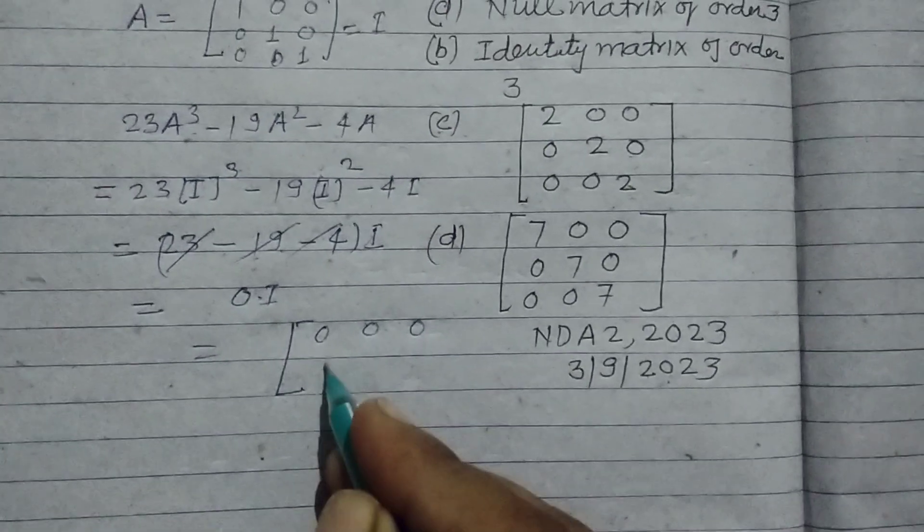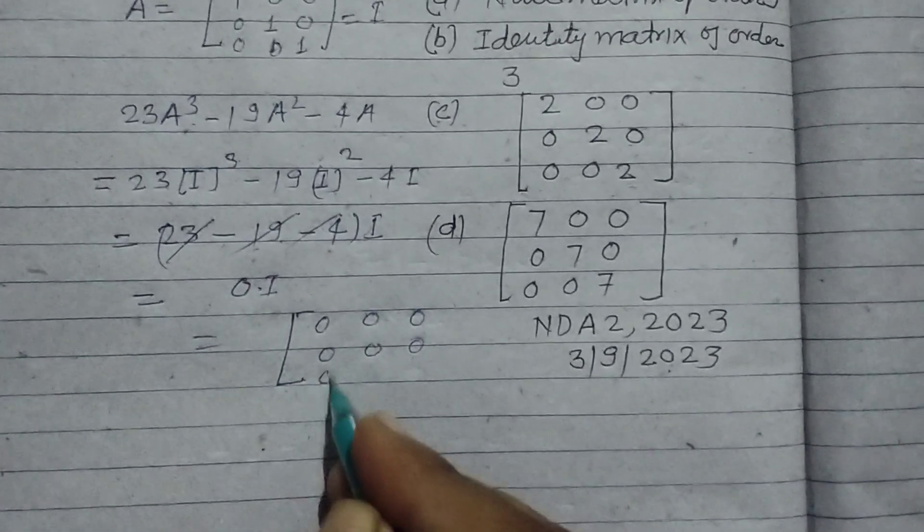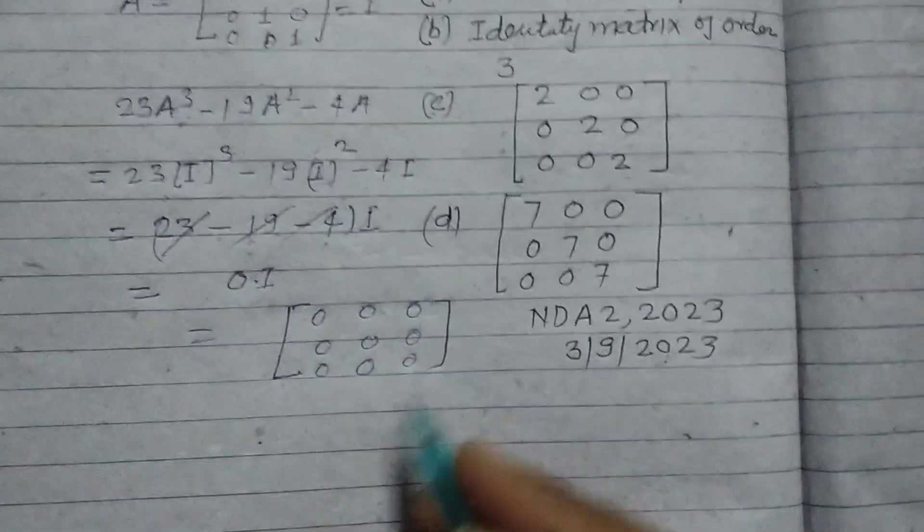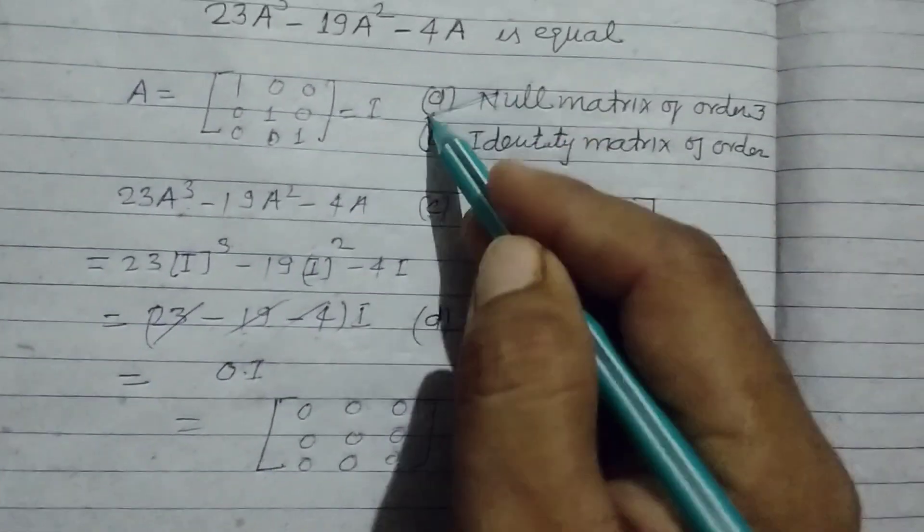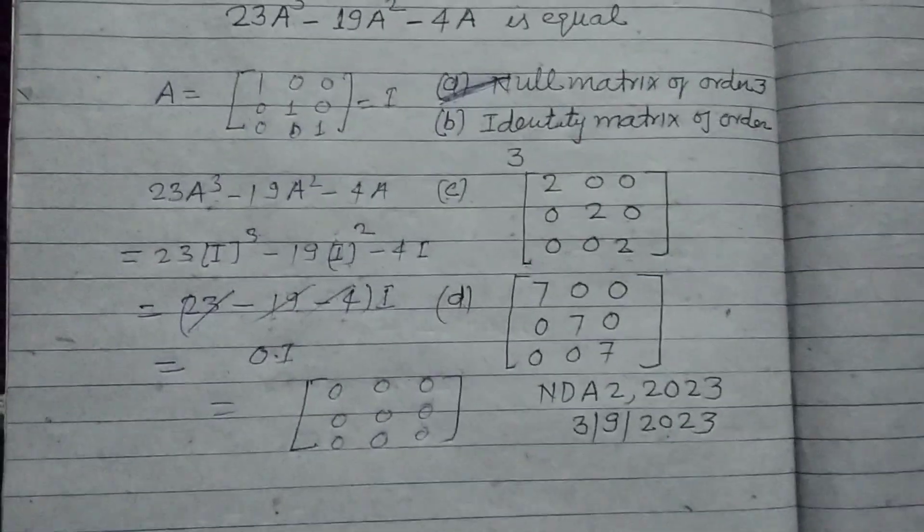And it is a null matrix. When we multiply 0 with the identity matrix, we get a null matrix of order 3. So A is the correct answer to this question.